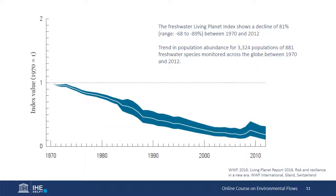Without exaggerating the doom and gloom, I'd like to note the trend recorded in the Living Planet Index, which has been monitoring the population abundance of more than 3,000 populations of freshwater species for nearly 50 years. In that time, they've recorded an average 80% decline in population numbers, which should be shocking. While these declines are not solely attributed to flow alterations, flow is an essential element in halting and reversing these declines — so we've got our work cut out for us.